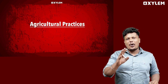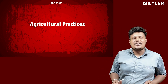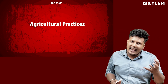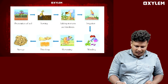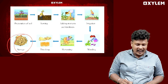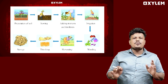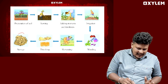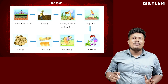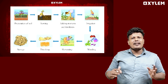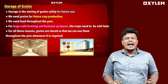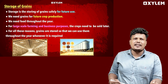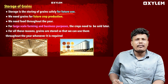We are going to discuss the content in crop production management and agricultural practice. We are going to study the steps — we are going to harvest, store the grains, and discuss the content. What do we need to store? We need to store the grains. Storage is the storing of grain safely for future use.